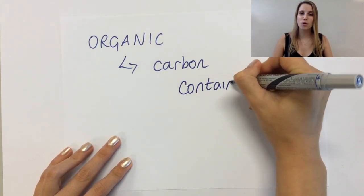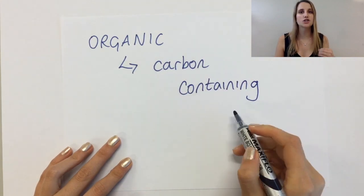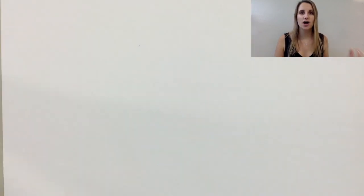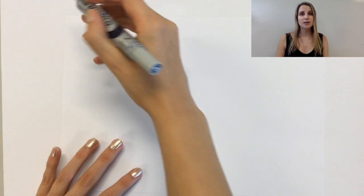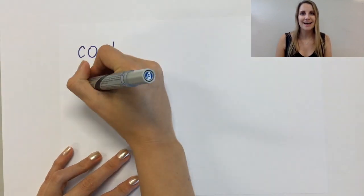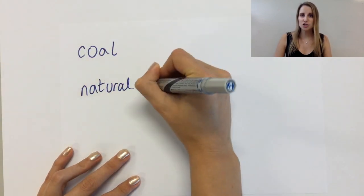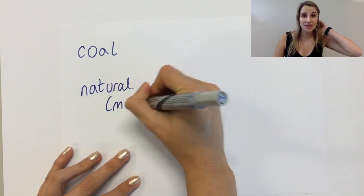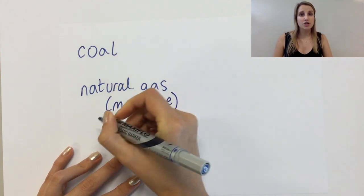but in GCSE what we're going to define this as is just compounds that contain carbon. Now the substances that we're worried about today, or we're looking at, is coal, natural gas, which is just methane, and petroleum.